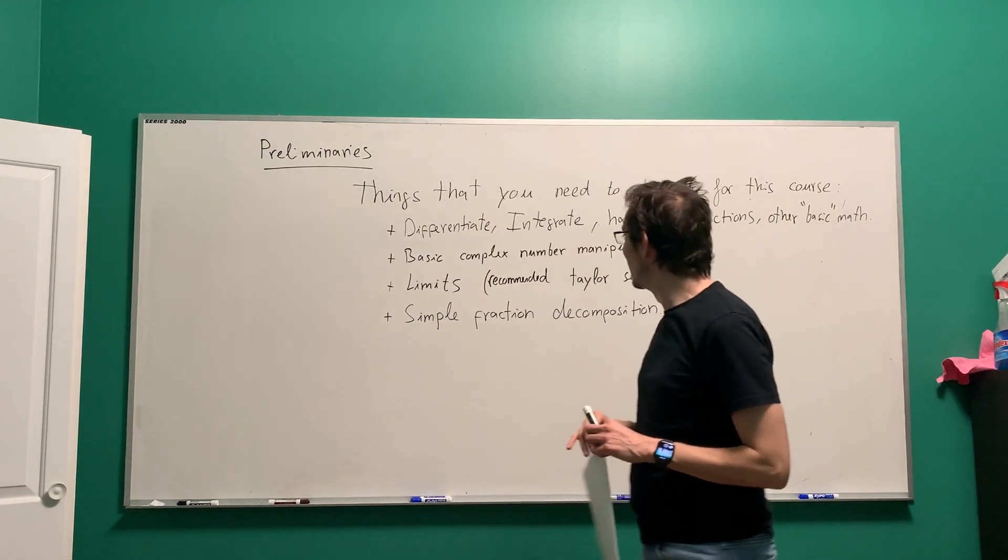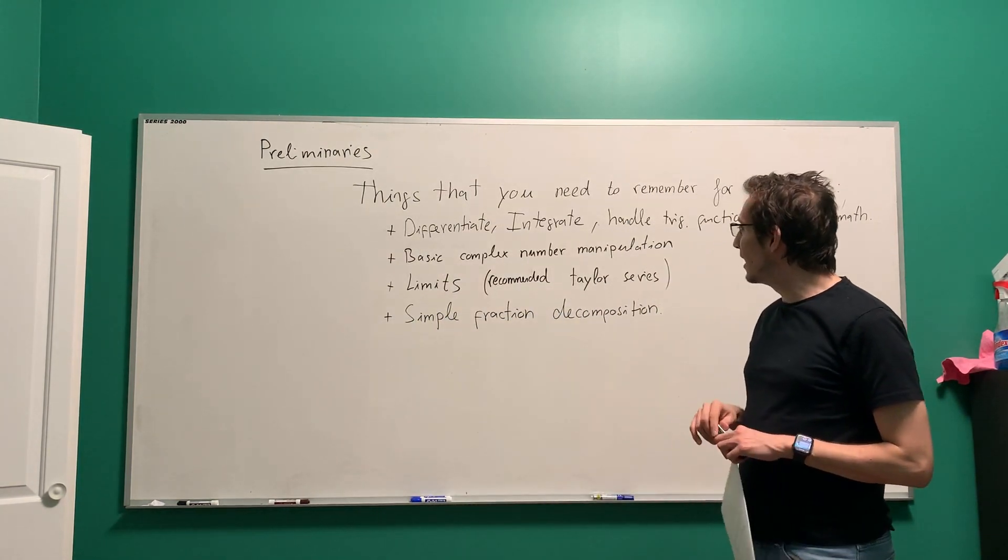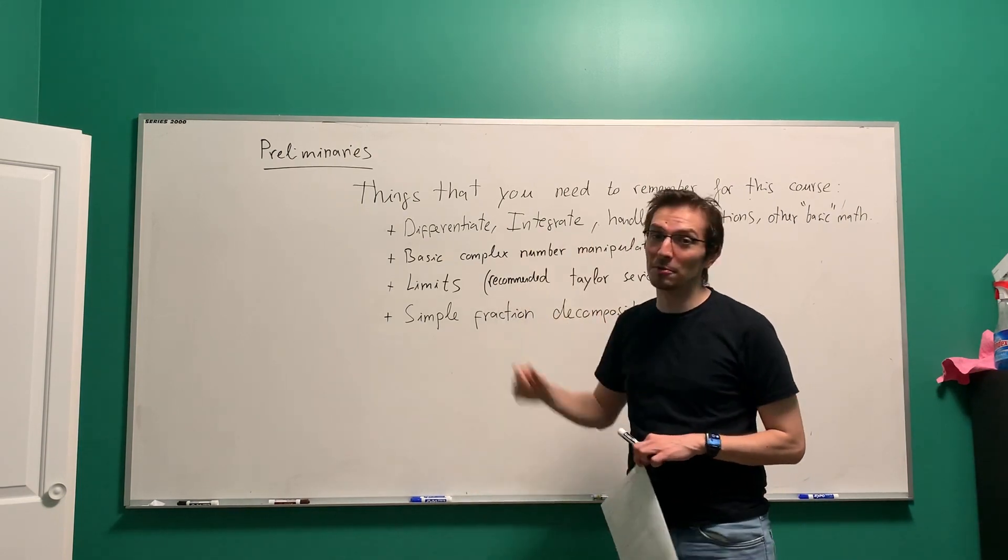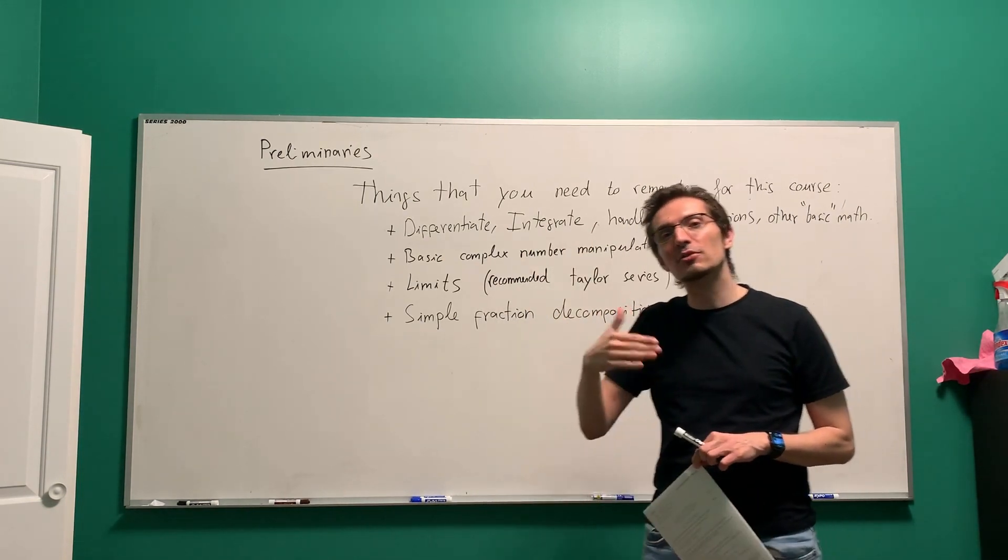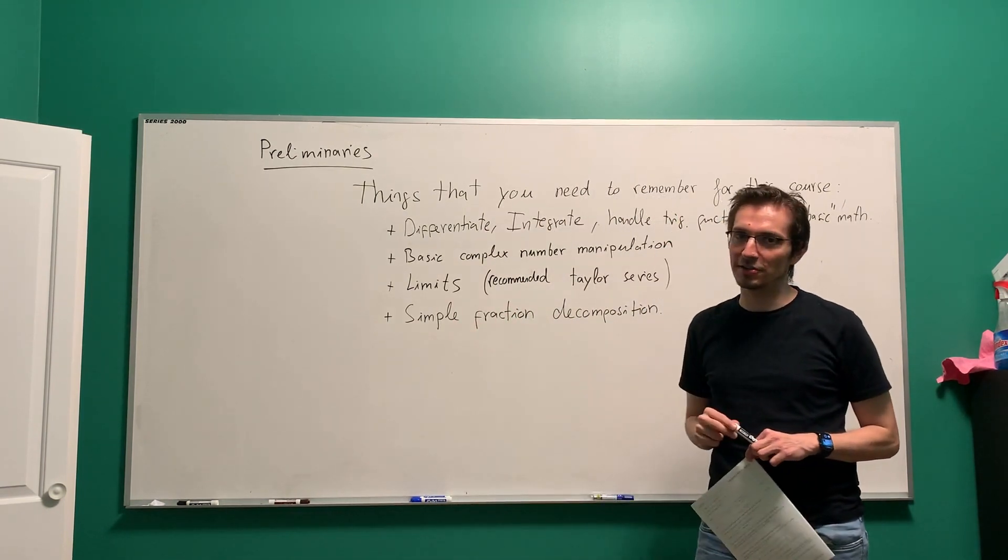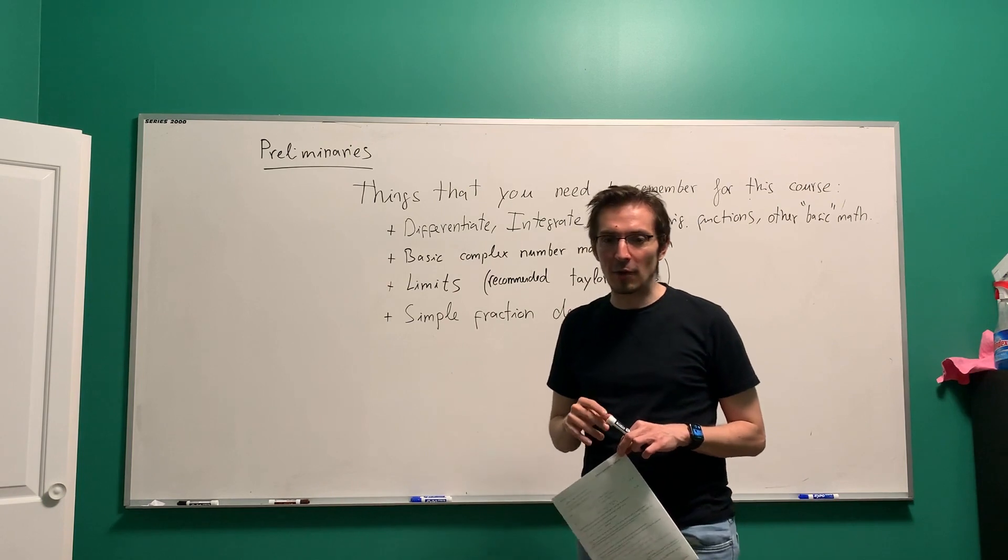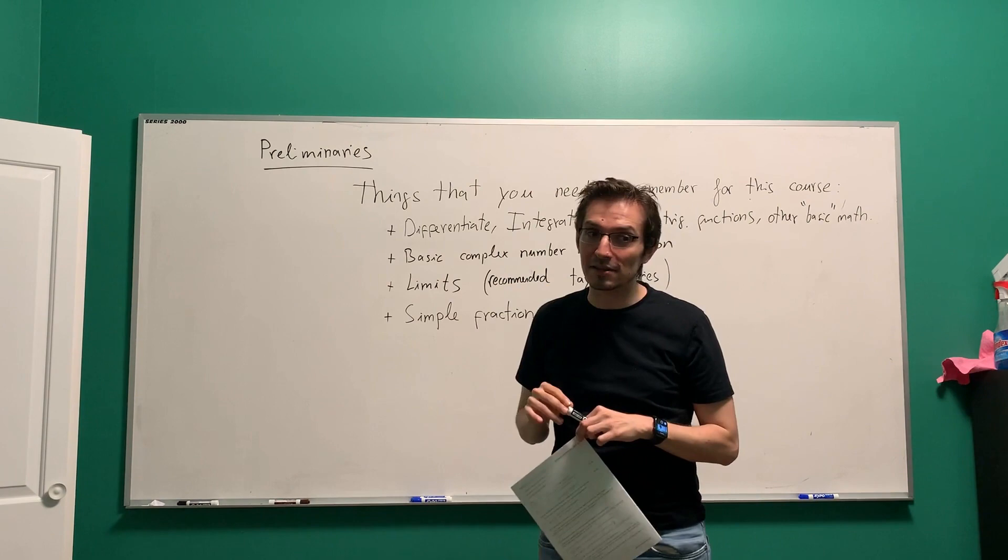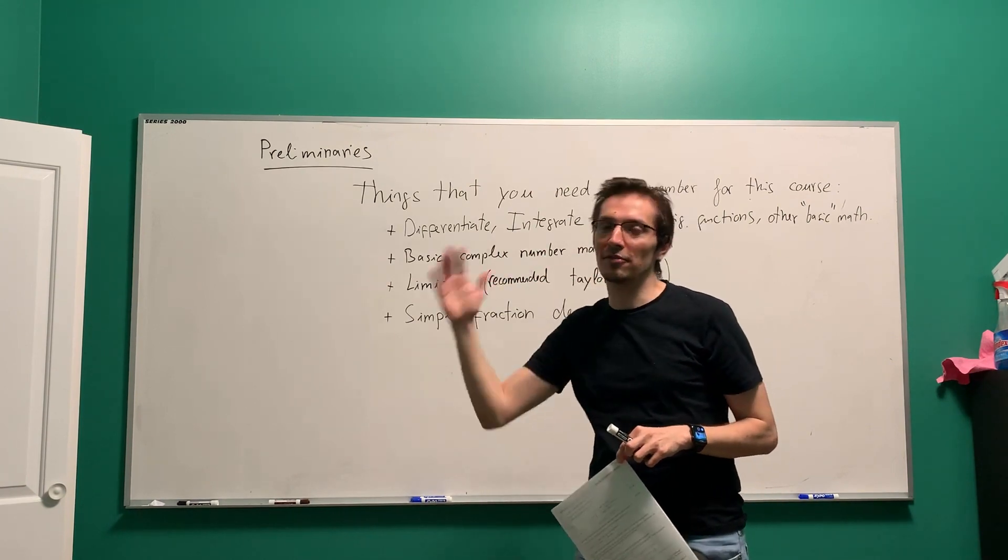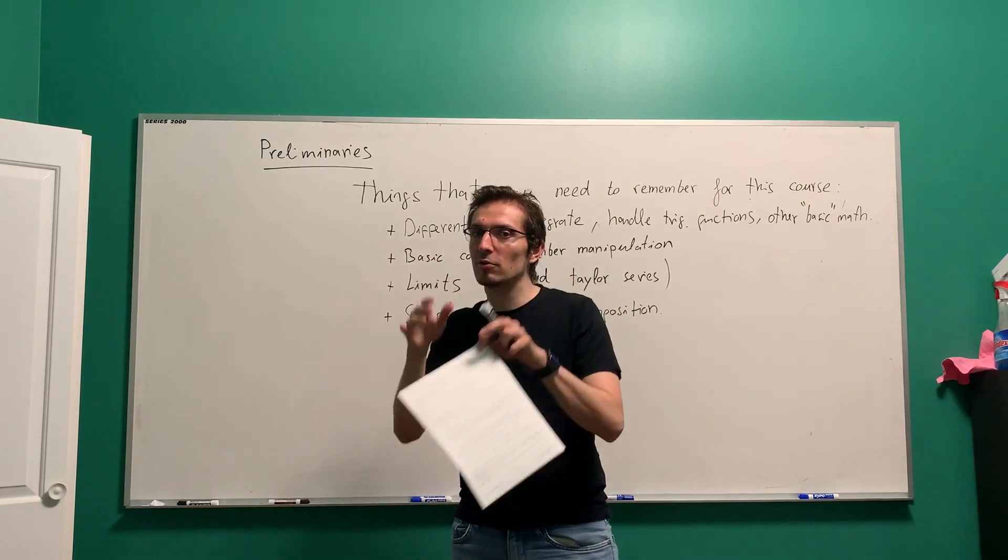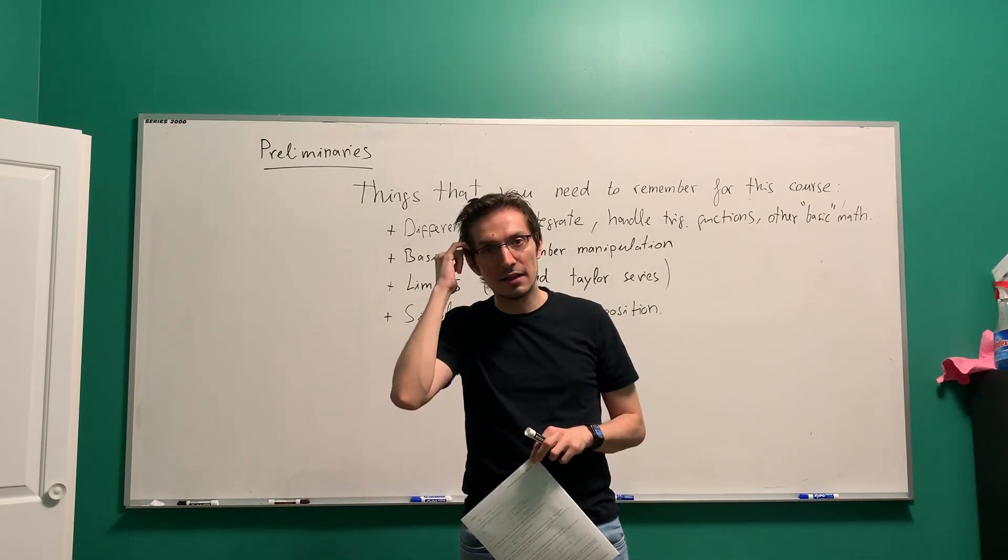All right, another thing that you need to remember is something that you saw in the context of actually computing integrals, but here we will actually use it for more things. It's what was called simple fraction decomposition. That is a method of writing a rational function - a function that is the ratio of two polynomials - in terms of simpler fractions, in terms of fractions of the roots in the denominator, the roots of the polynomial in the denominator.